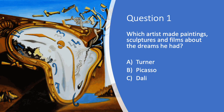Question one. Which artist made paintings, sculptures and films about the dreams he had? Is it A. Turner, B. Picasso, or C. Dali?